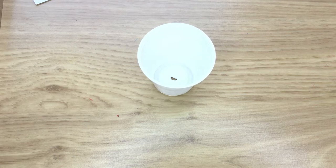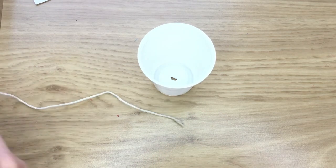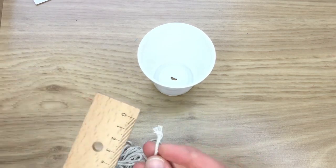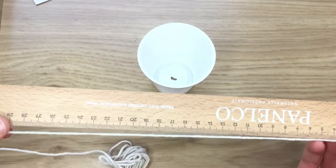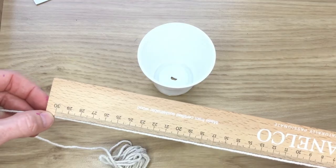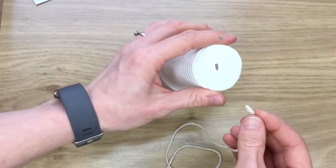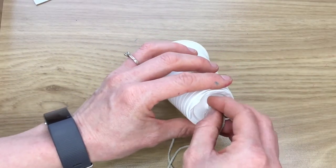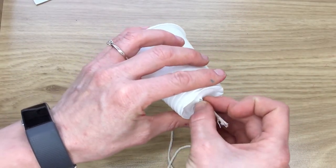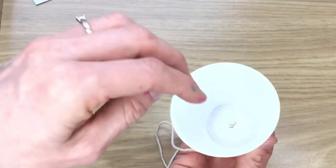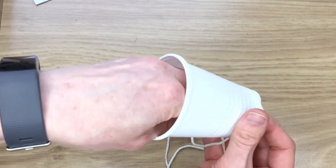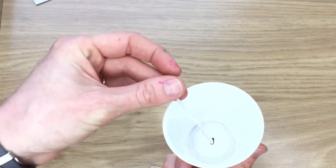So, the next thing is some string. I'm going to cut mine about the length of a ruler, about 30 centimetres. And once you've cut that, you need to push the string through the hole and grab it through. There it is.